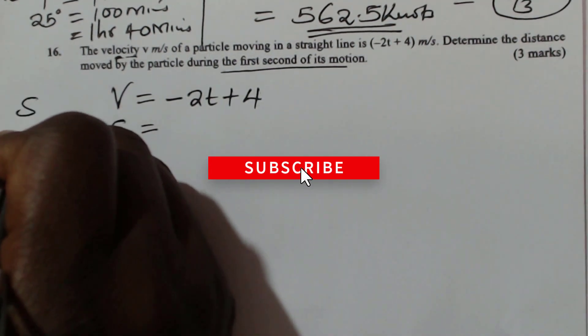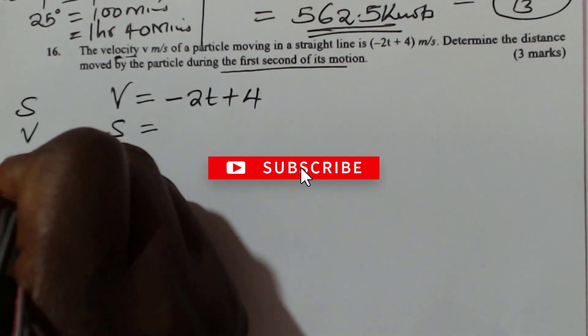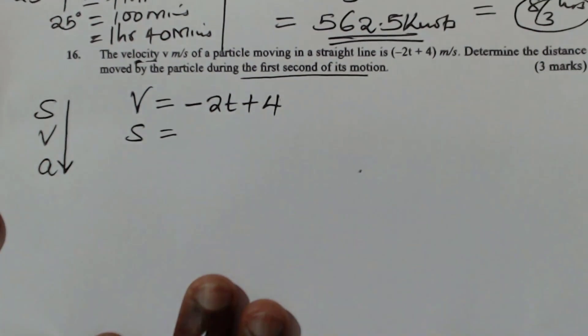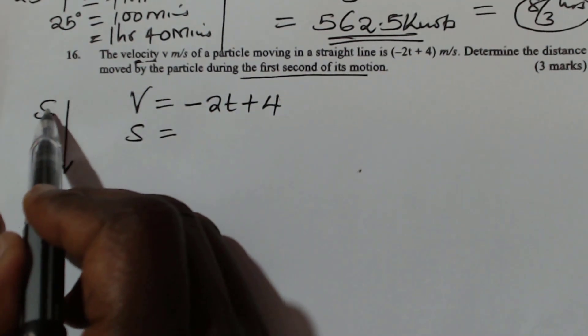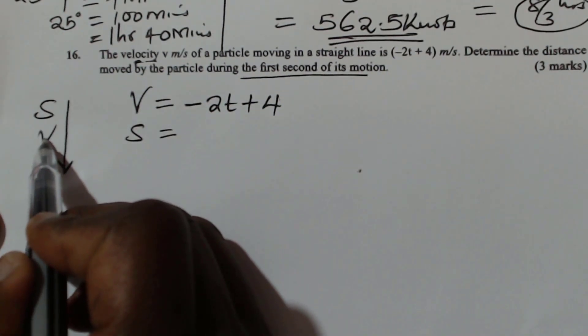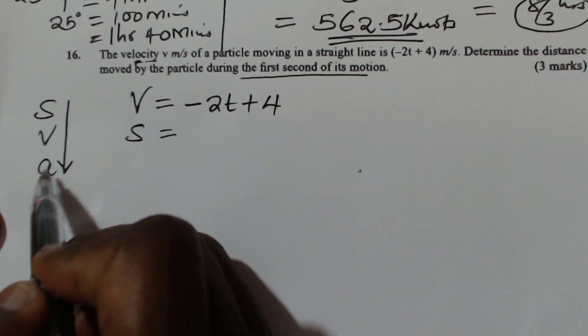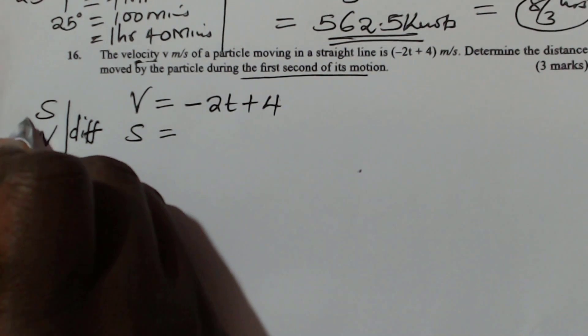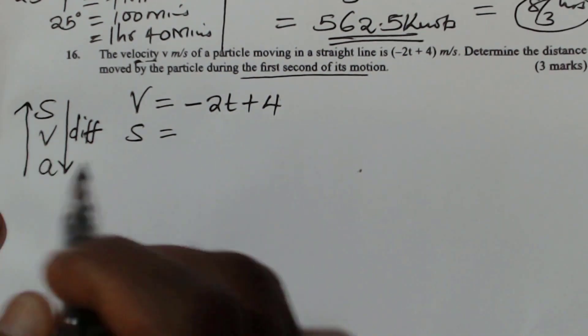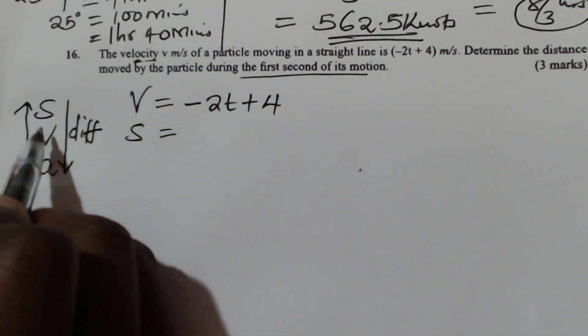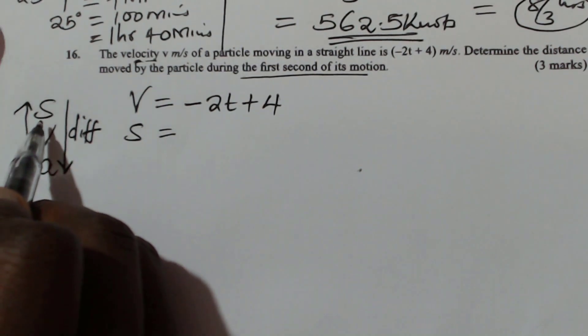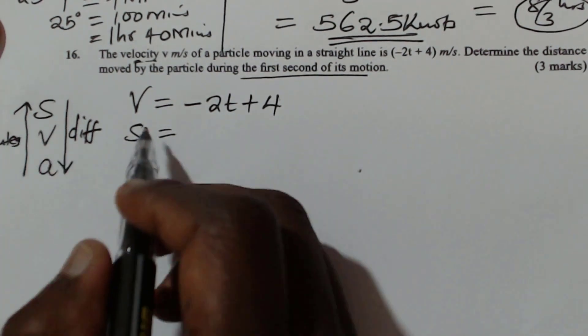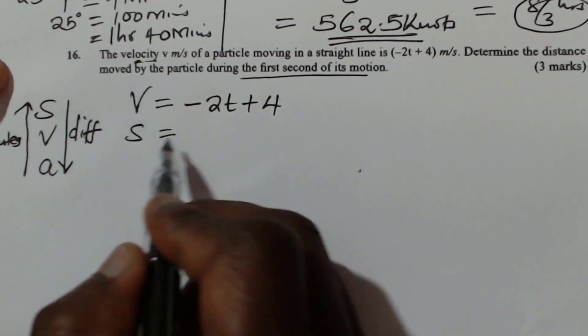When you're given displacement, then velocity, acceleration. When you're moving downwards, that is when you're given displacement and you're required to get velocity, or given velocity and you're required to get acceleration, this downward movement, you differentiate. Then the opposite, if you're moving upwards, like in this case, you are moving from velocity to displacement. So that one you have to integrate. So you're going to integrate velocity to get distance.